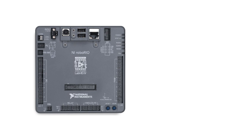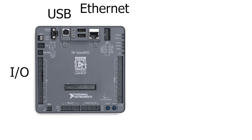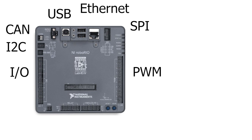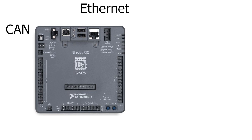The RoboRio can connect to devices using I/O ports for input and output, Ethernet, USB, CAN, I2C, SPI, PWM, and analog. For the purposes of the Program Your Robot series, I'll just be going over CAN and Ethernet, as those two can do most of what you want for your robot. I might make more videos in the future covering the others if there's interest.